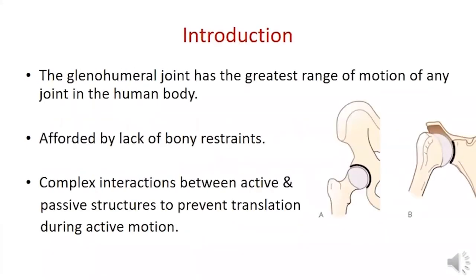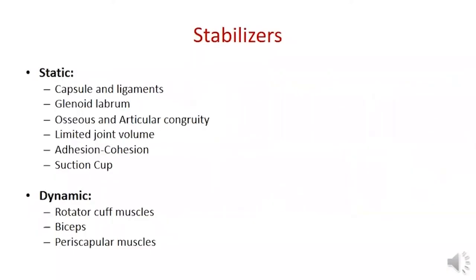The shoulder joint has the greatest range of motion of any joint in the human body, which is afforded by lack of bony constraint, so it is inherently unstable. Shoulder stability is maintained by complex interactions between static and dynamic stabilizers to prevent translation of the joint during motion.